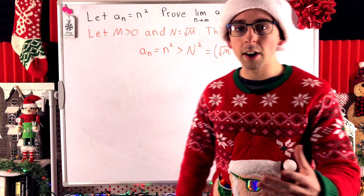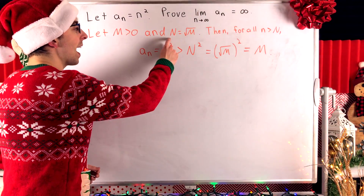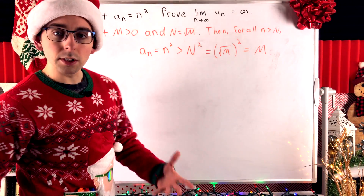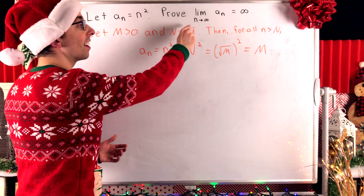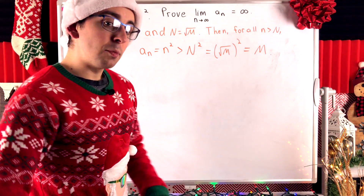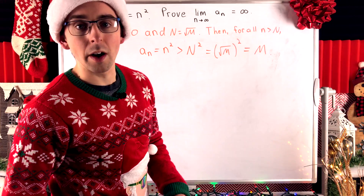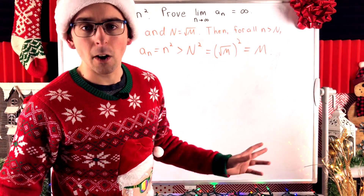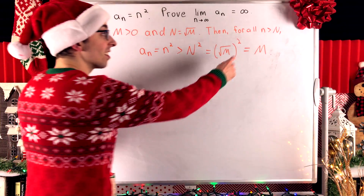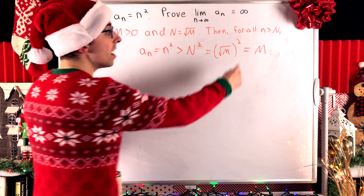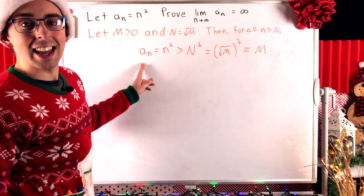Just a couple quick notes on some slight variations on how you might see this proof written. Sometimes instead of big N being set equal to the square root of m, you might see big N set to be a natural number that's at least as big as the square root of m. Sometimes you might also see little n just taken to be greater than the square root of m, forgetting about big N altogether. But regardless, the idea is the same: after a certain point, for all n greater than big N, the values of our sequence are greater than m.